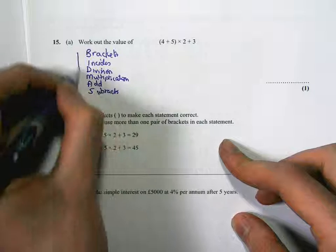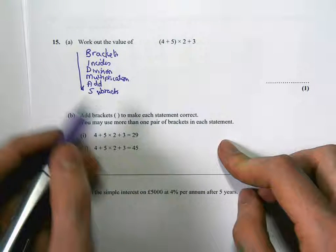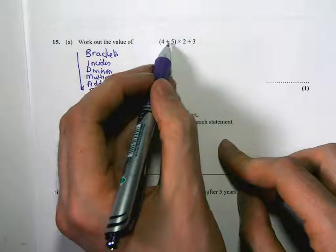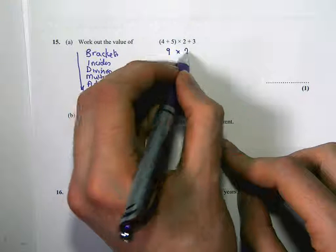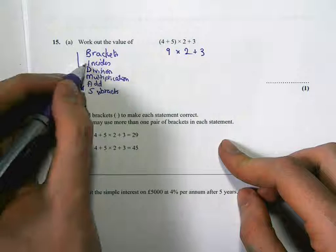And we have to do things in that order. Brackets is most important. So first do the brackets bit. 4 plus 5 is 9. So we've got 9 times 2 plus 3. No indices, no division.